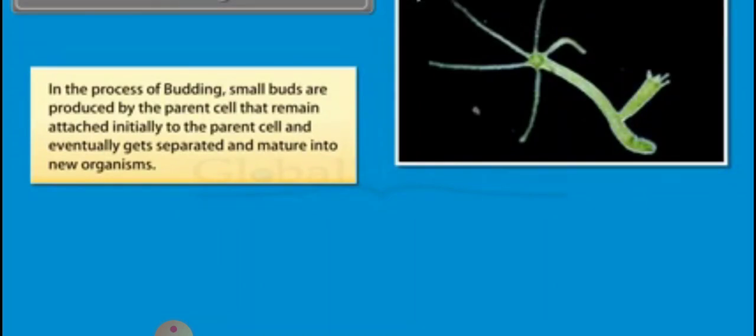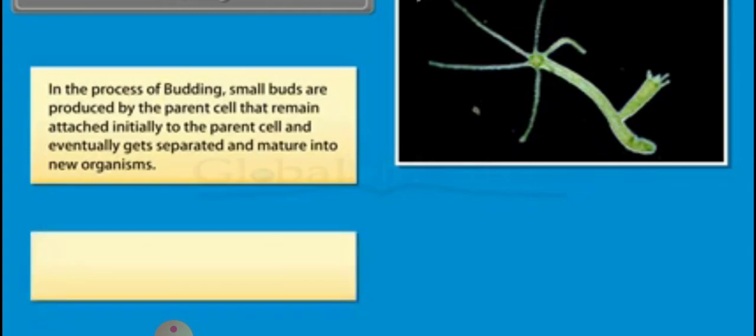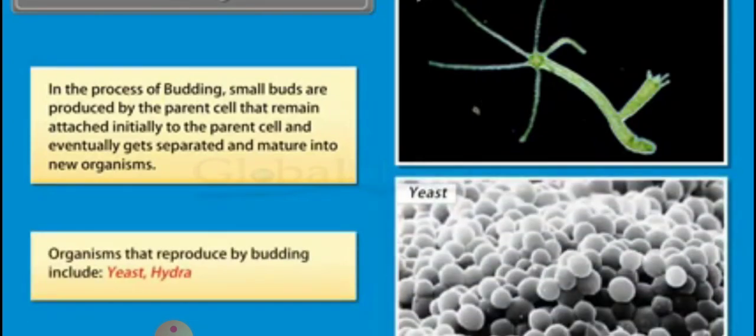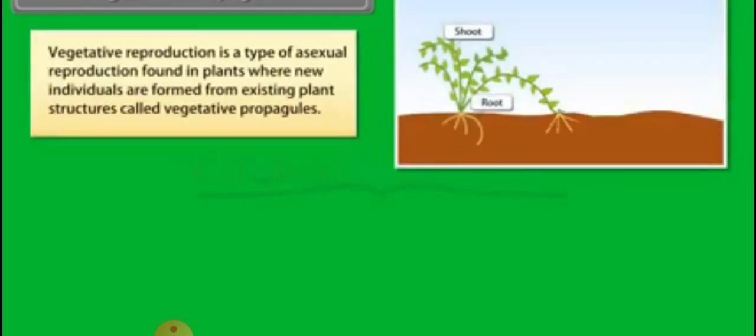In case of budding, we see that there is a bud or a notch which is formed in the parent body. When that becomes mature, it gets detached from the parent and then gives rise to the new organism, observed in hydra and yeast, that is a unicellular fungi which reproduces by budding.